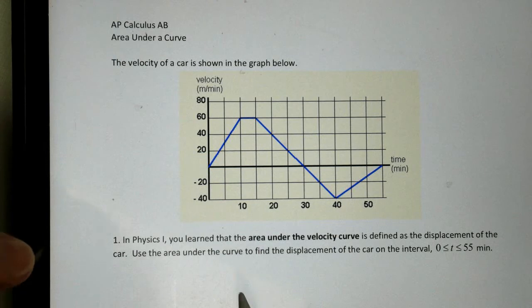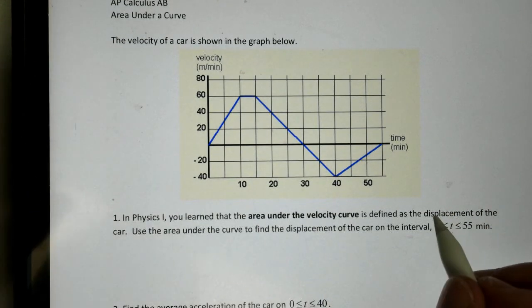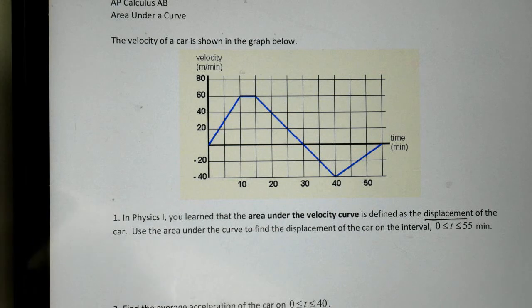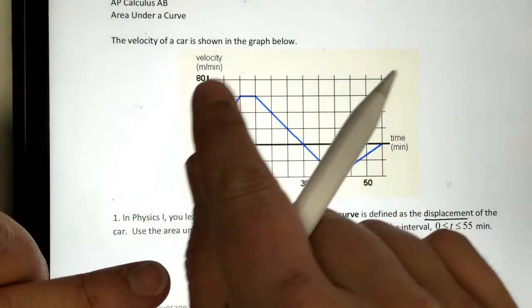From physics, we learned that the area under a velocity curve is defined as the displacement of the car. So we're going to use area to find out how far this car traveled.